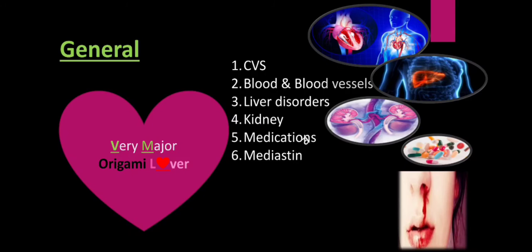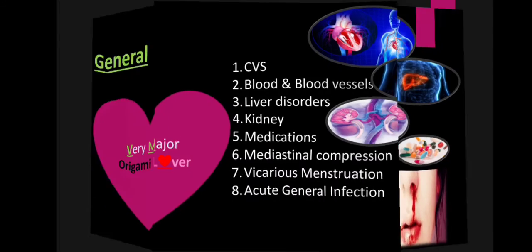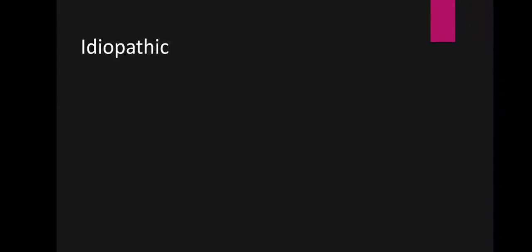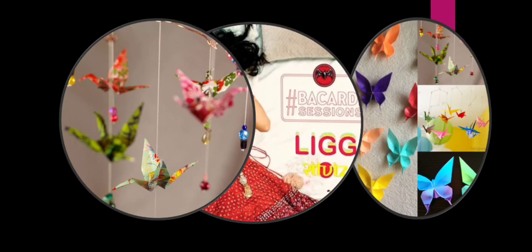These acute infectious diseases are also causes of epistaxis. To summarize the general causes: 'Very major origami lover' — major organs are liver, heart (representing CVS including blood and blood vessel disorders), and kidney. M stands for medications, V and M for vicarious menstruation, and GI from 'Leggy' for acute general infections. The third category is Idiopathic — many times the cause of epistaxis is not clear. Thanks for watching.